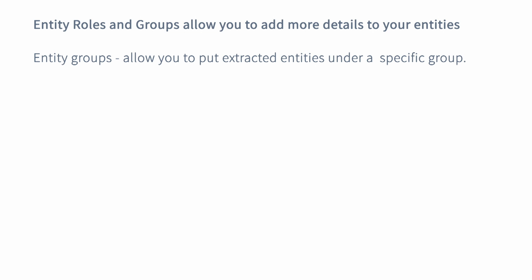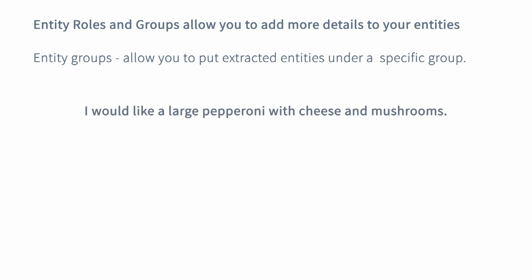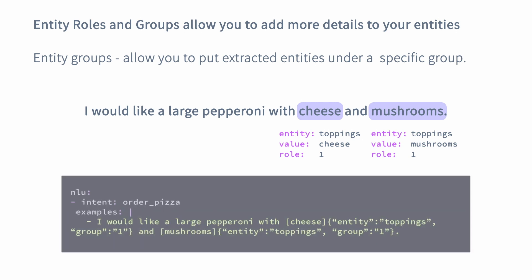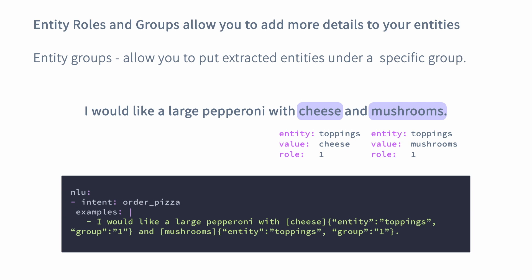Entity groups allow you to group specific entities under a specific category. For example, in a pizza booking assistant, you can enable your assistant to group specific toppings corresponding to a specific order. An important thing about entity roles and groups is that you have to include quite a few different examples for your assistant to really learn. So make sure to include different examples of different variations of roles and groups.